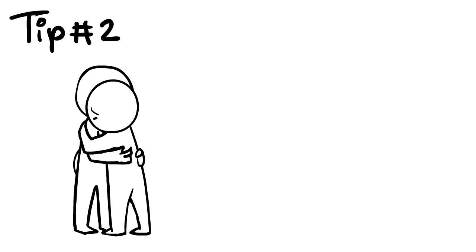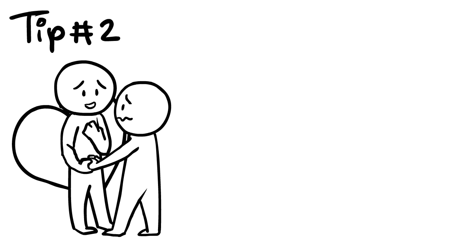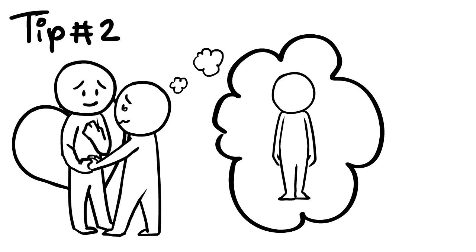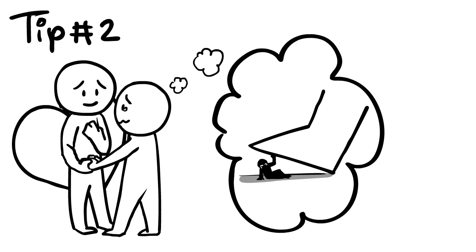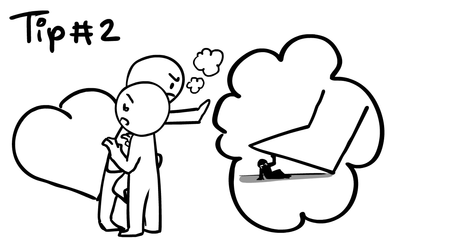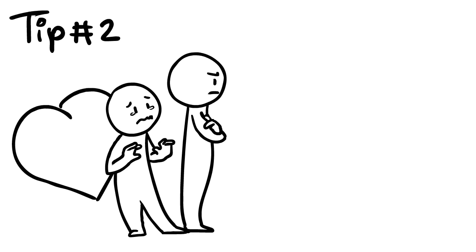On to tip two: do show them that you still care. This one may seem obvious, but often mental illness makes a person feel broken or somehow less than. Therefore, your loved ones should be reminded that you care greatly about them. Without this reassurance, they may feel as if no one cares.